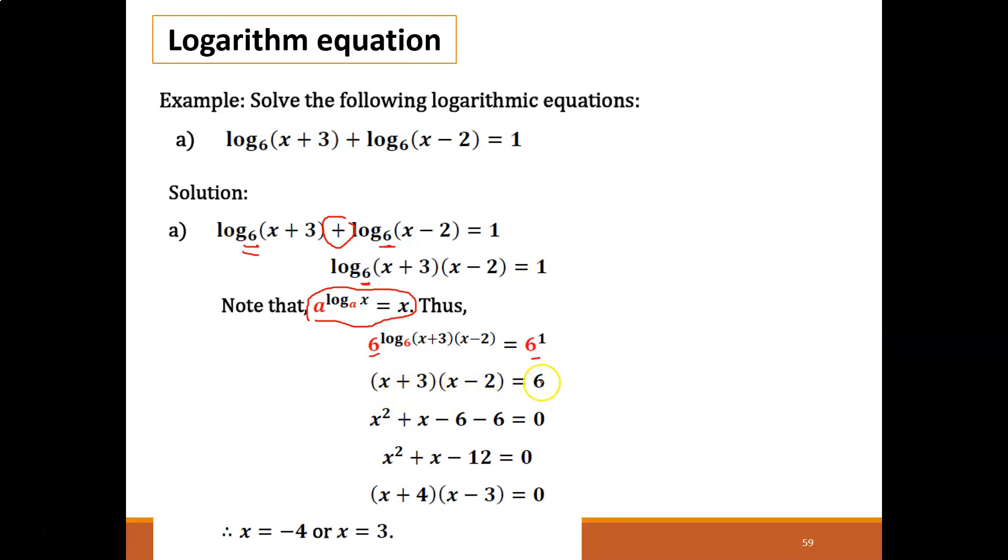This one you just expand. You need to expand this one. This one becomes, you bring it to this side, it becomes negative 6 equals 0. Then you have x squared plus x minus 12 equals 0, which factors to x plus 4 times x minus 3 equals 0. So x equals negative 4 or x equals 3. That's it.